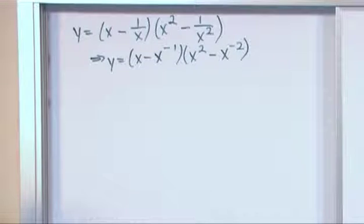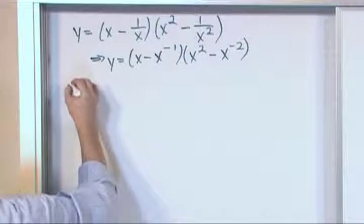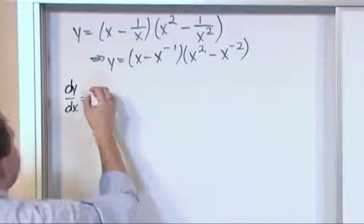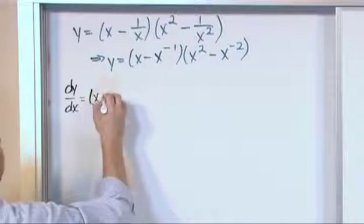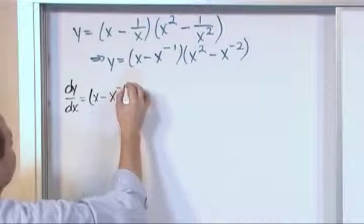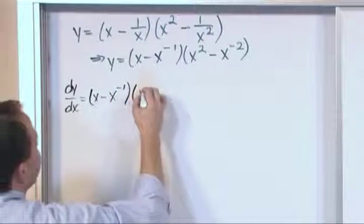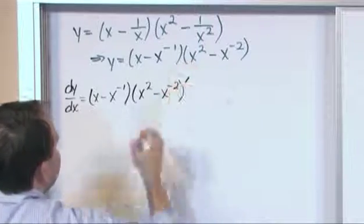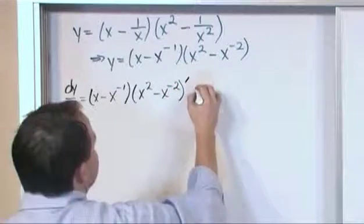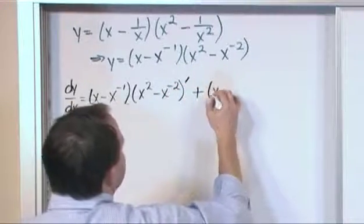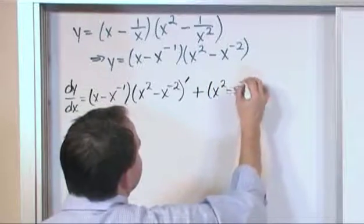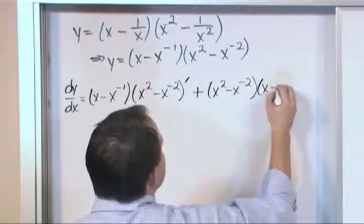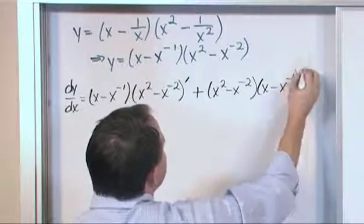But you work exactly the same way. So dy dx is equal to first times the derivative of the second, x minus x to the negative 1 power times the derivative of this guy, x squared minus x to the negative 2. Take the derivative. Plus the second term, x squared minus x to the negative 2 times the derivative of the first term, which is x minus x to the negative 1. Take its derivative.